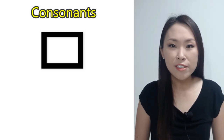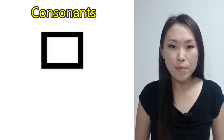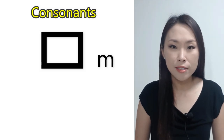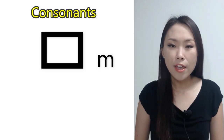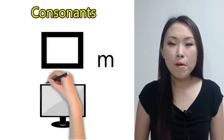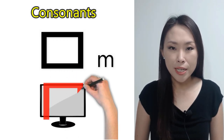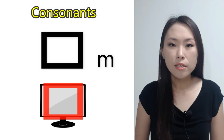The name of this consonant is ㅁ. The romanized letter for ㅁ is 'm'. ㅁ sounds like the letter 'm' in the word 'monitor'. The shape of the monitor looks like ㅁ.